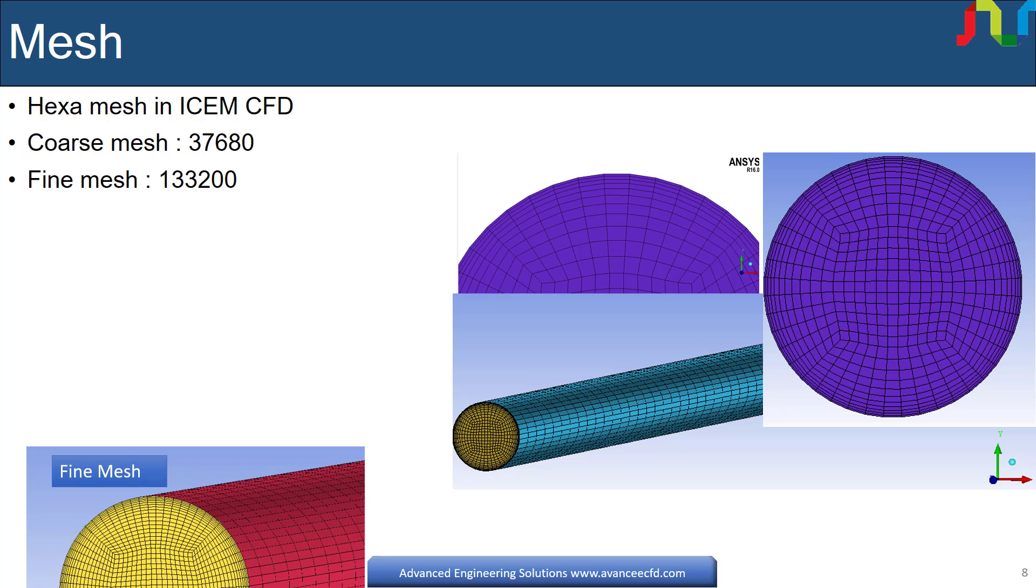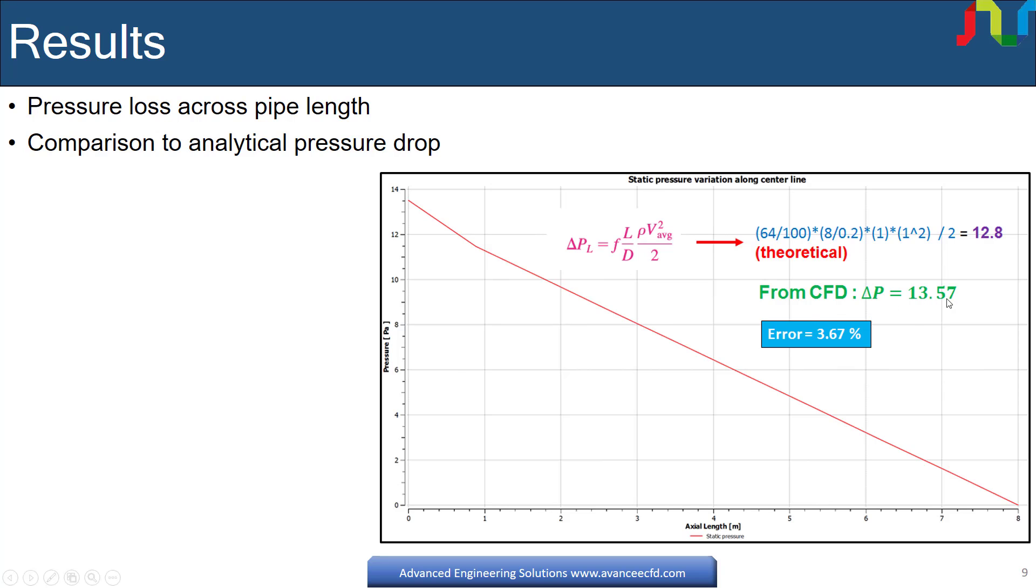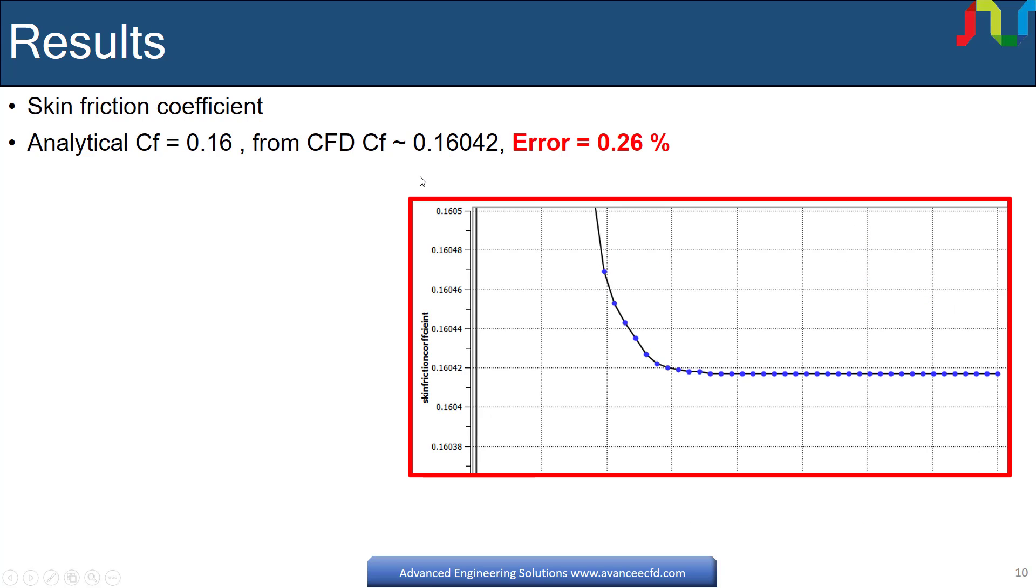Here you can see that the pressure drop from the CFD is 13.57 pascal and whereas analytical pressure drop is 12.8 pascal. Error is around 3.67%. Fine mesh produces the pressure loss around 13.52 pascal, which is very close to coarse mesh results of 13.57 pascal. Analytical coefficient of friction 0.16 and from CFD coefficient of friction is 0.16042.